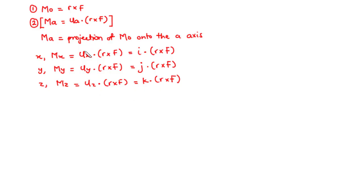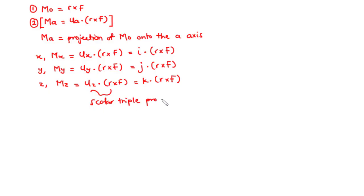The combination of the dot product of the unit vectors and R cross F is what you call the scalar triple product.